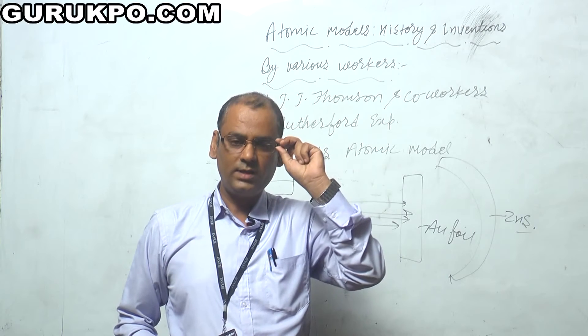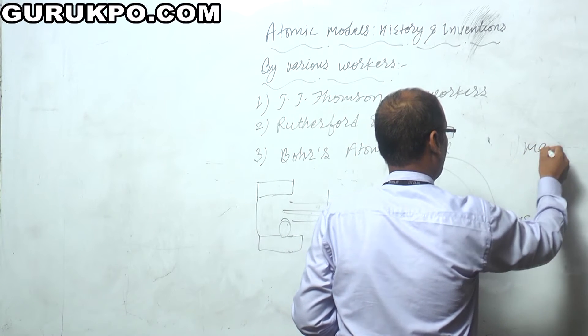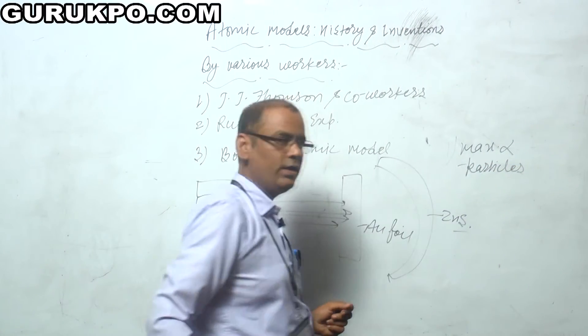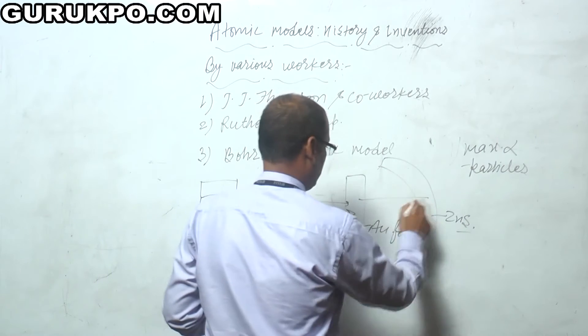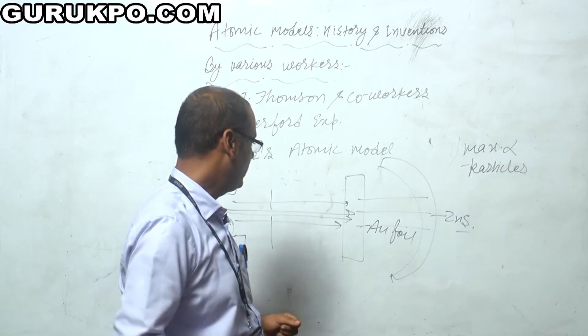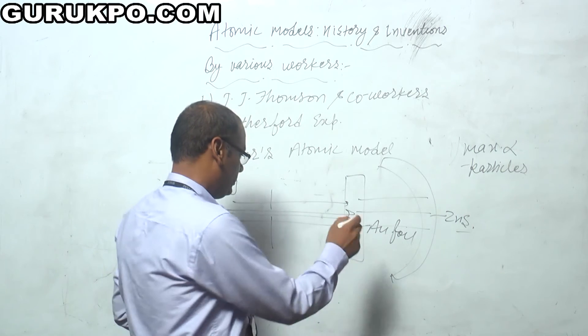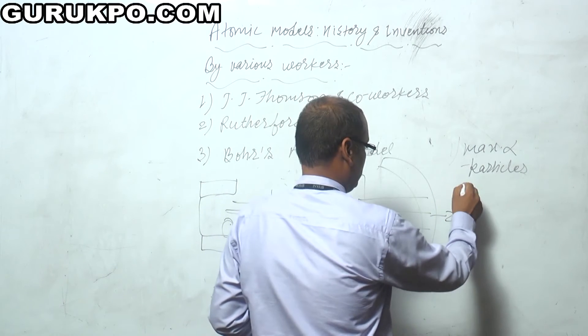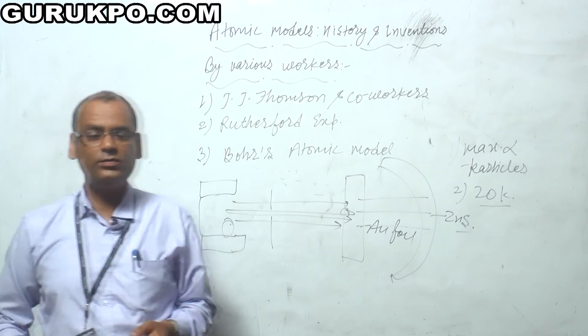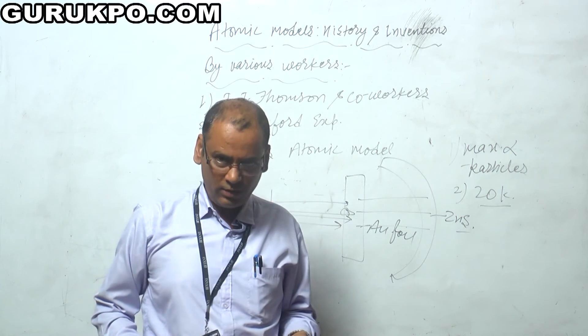Basically there were three. One was that the maximum number of alpha particles were undeviated, means they directly struck on the surface of zinc sulfide and there were no particles completely recoiled. But out of twenty thousand particles, one particle was hit back to the source of the alpha particle. That means he has drawn a number of conclusions.